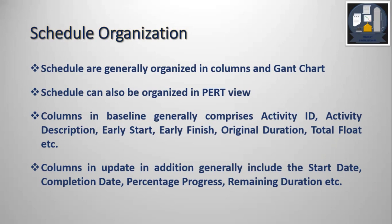The Gantt view has columns and a Gantt chart. The columns in the baseline generally comprise the Activity ID — the unique ID — the activity description, the detail of the activity. Then we have the early start, early finish, original duration, total float, etc. This is just an example of a few of the columns we can have.